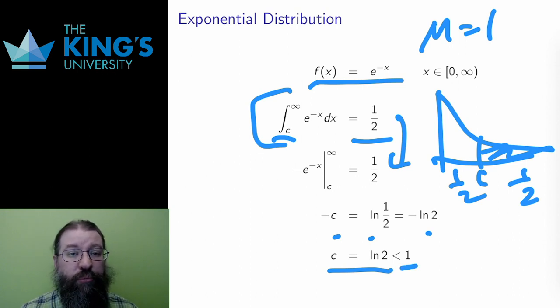ln 2 is less than 1, so the median of the exponential distribution is less than the average. And this matches the example before that I mentioned with income, since income distributions tend to behave like the exponential distribution. What's the true typical value? Is it 1 or ln 2?